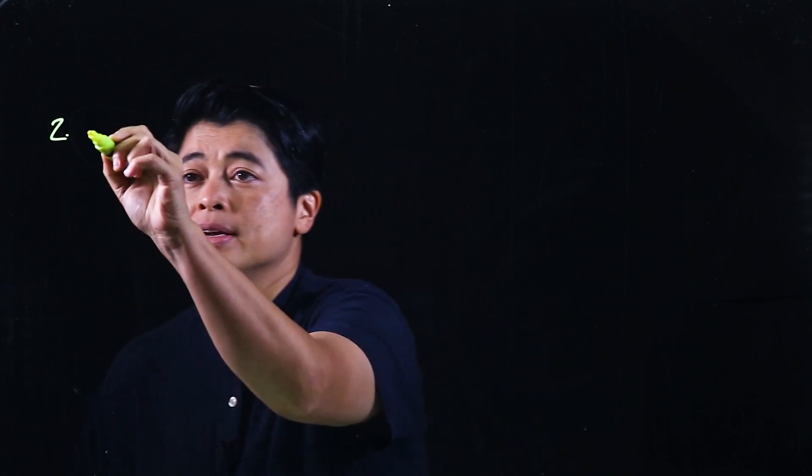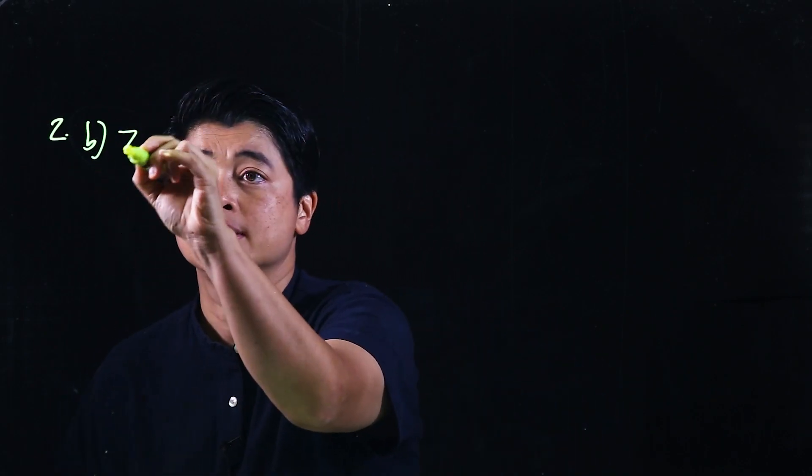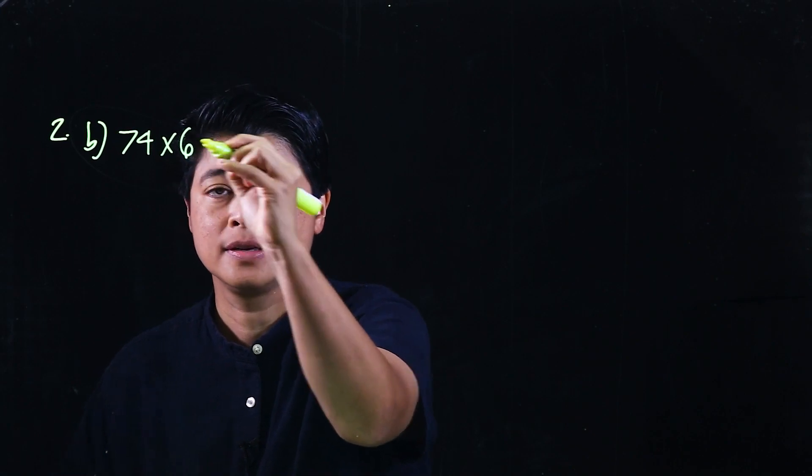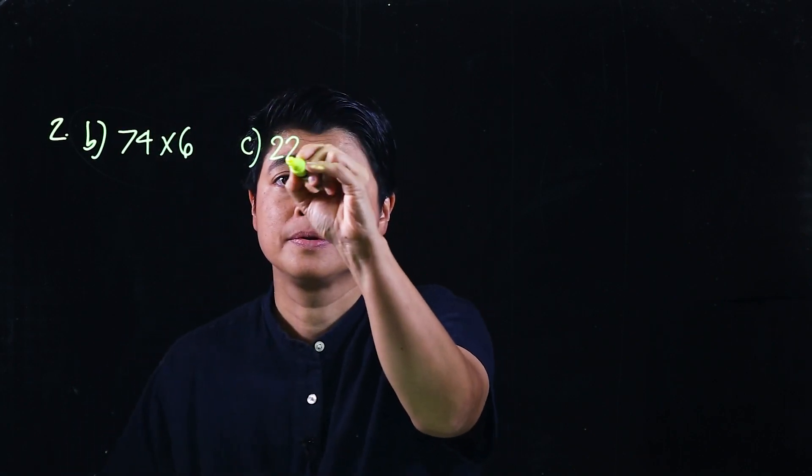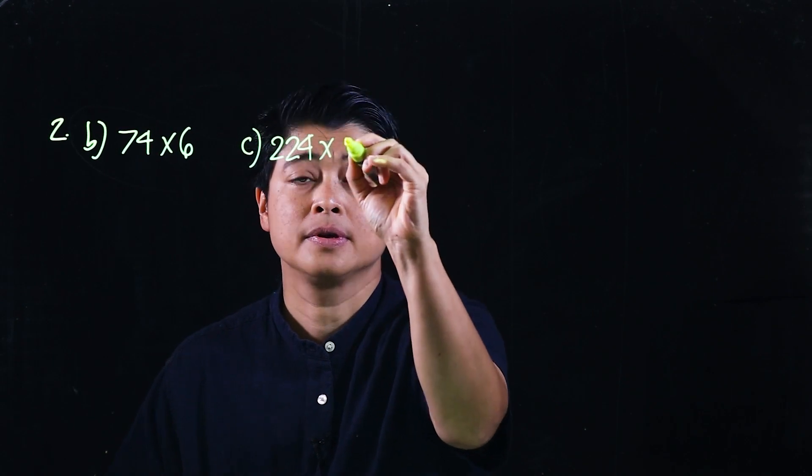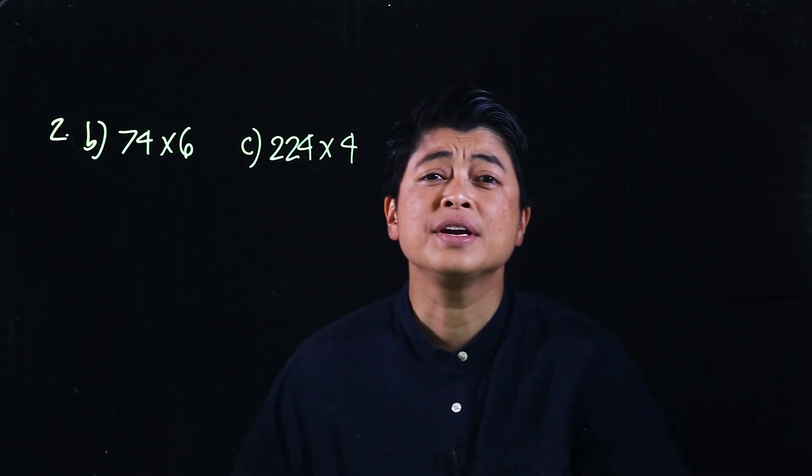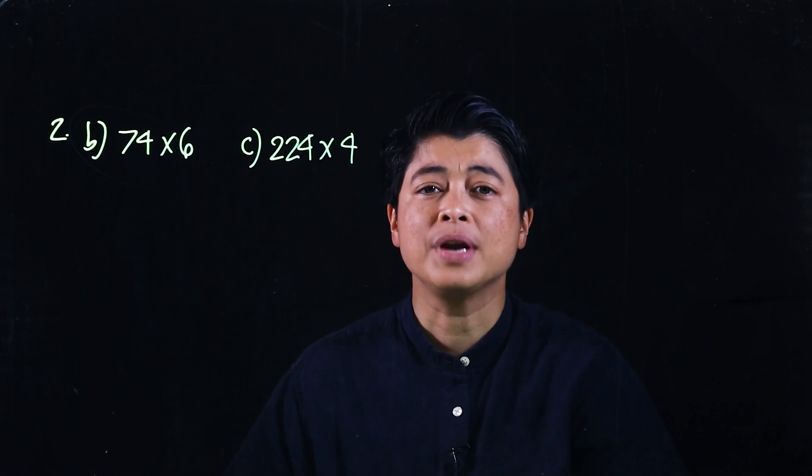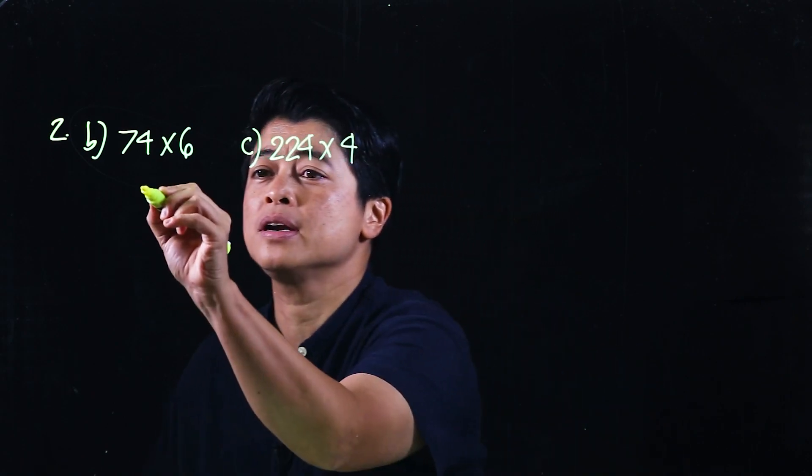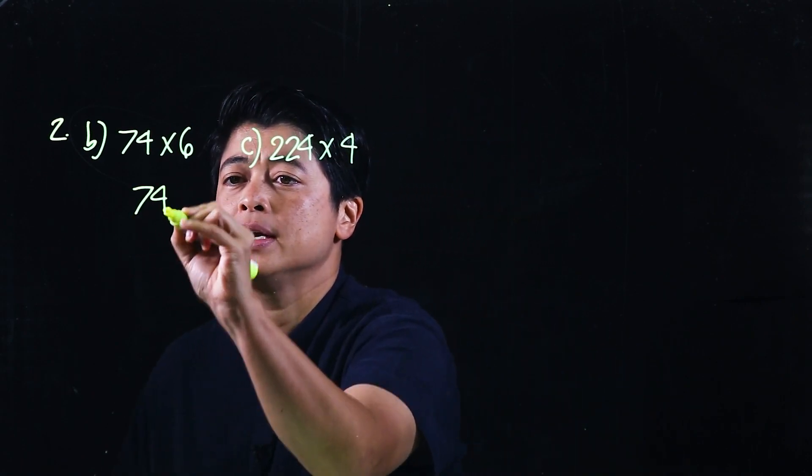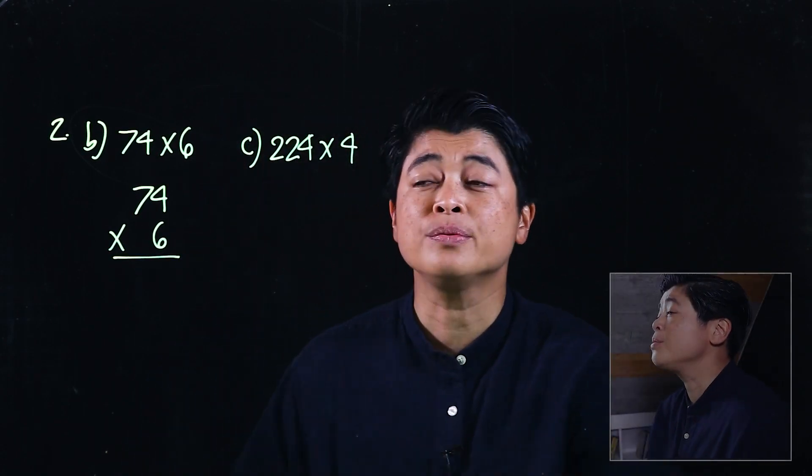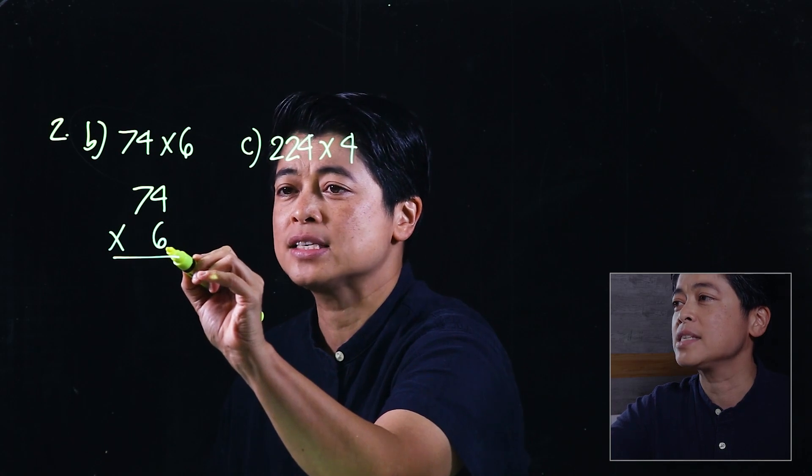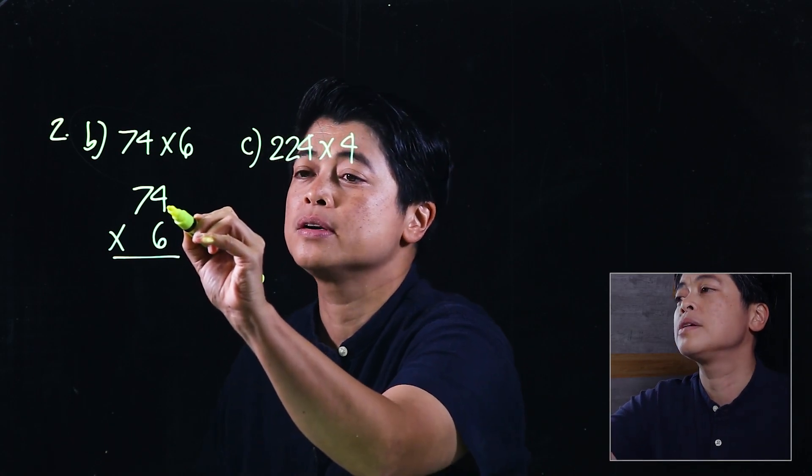In page 124 it says multiply. Here we need to rewrite the problem so that the bigger number is on top and the smaller number is on the bottom.